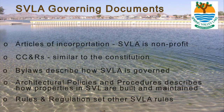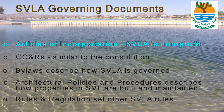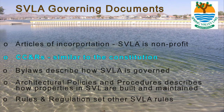There are four main documents that direct how SVL is governed. One very small document not included in those four is the Articles of Incorporation, which defines our California nonprofit corporation status. The most significant governing document is our Covenants, Conditions, and Restrictions, or more commonly referred to as our CC&Rs. This one document is like the Constitution of Spring Valley Lake.